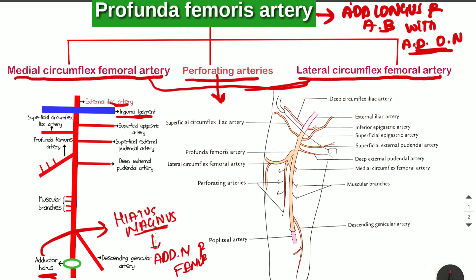In the second diagram you can see the inguinal ligament. Just before piercing it, the vessel is the external iliac artery, which gives two branches: the deep circumflex artery and the inferior epigastric artery. After piercing the inguinal ligament it becomes the femoral artery, which travels downward, pierces the adductor hiatus or hiatus magnus, and becomes the popliteal artery.